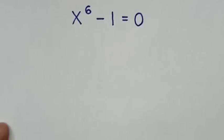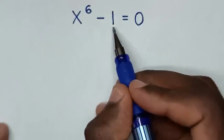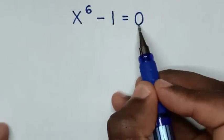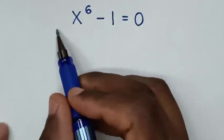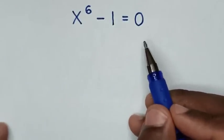Hello! How to solve x power 6 minus 1 is equal to 0, to find the values of x from this equation?